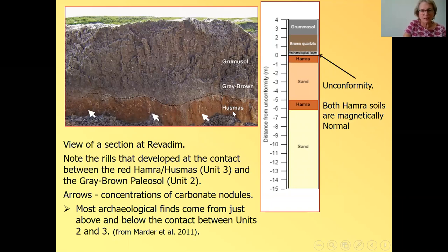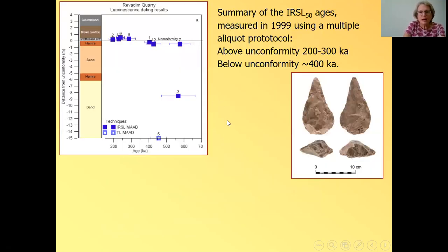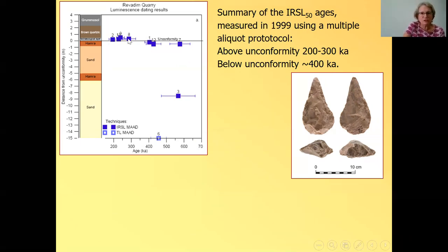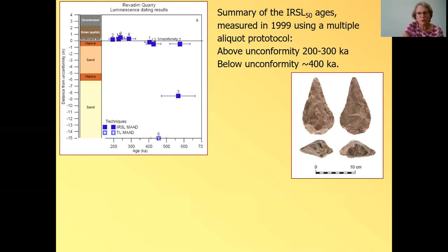And we have always interpreted this as an unconformity between the soil, the red soil, and the gray soil. The artifacts are concentrated, more or less, at this contact, a little bit below embedded in the reddish soil, and a little bit above. And both hamra soils were found to be magnetically normal. So we don't have any reverse in this section. So here I'm showing the IRSL ages that I measured in the late 1990s, using a multiple aliquot protocol. SAR was not invented yet. And here are some of the finds from the site, beautiful hand axes. So above the conformity, I got ages of about 200 to 300,000 years, below around 400,000, and then it goes down. And I had an age from the base of the section, which was about 500,000 years. The dose rate was very, very low, very pure quartz. So even with the methods at that time, we could get such old ages.